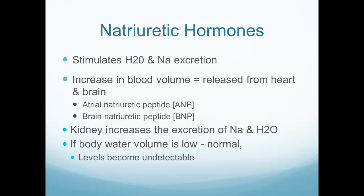Natriuretic peptides, on the other hand, are used to get rid of fluid when the patient has too much on board — they stimulate water and sodium excretion. These come from the heart when it is being stretched too much. The two main ones are atrial natriuretic peptide and brain natriuretic peptide. BNP does not actually come from the brain — it was first isolated from the brains of animals, which is where the name came from. In the human body, BNP comes from the heart as a result of too much blood volume stretching it. BNP then signals the kidneys to get rid of the excess fluid.